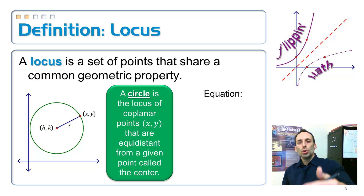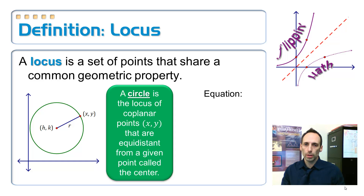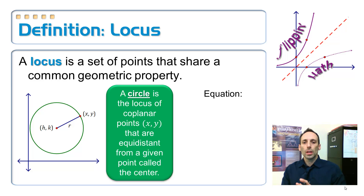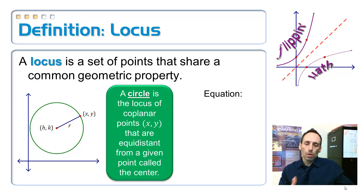The definition that you learned for a circle was a locus definition. Take a look in that green box: a circle is a locus of coplanar points — coplanar means all the points are on the same plane. It's a collection of points x, y that are equidistant from a given point. Equidistant means the same distance away from a given point called the center.